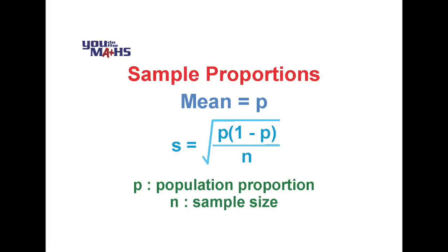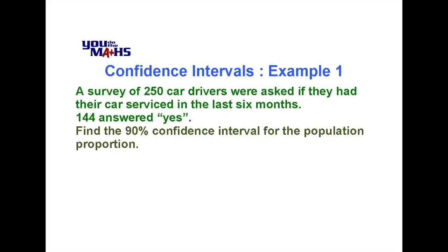Let's look at an example now where we use a sample to do some research and then determine how confident we are about our result. In this example we've asked 250 drivers if they've had their car serviced in the last 6 months and we're trying to set up a confidence interval where we can say 90% of the time the interval we're presenting will actually contain the population proportion.